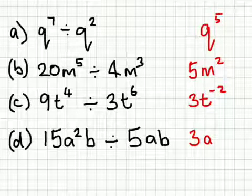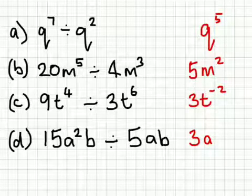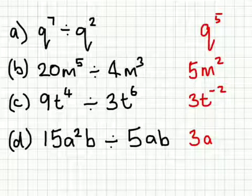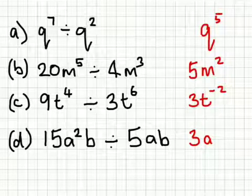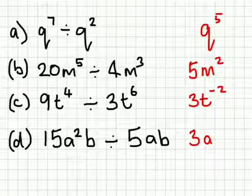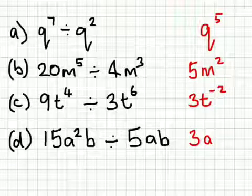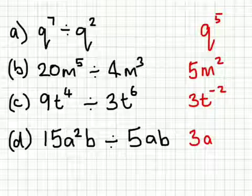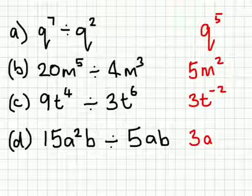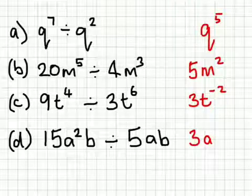Hopefully, when you came down to doing the last one, you realize that with a b and the b both to the power 1, when you subtract them, it gives me b to the power 0. One thing you should remember is anything to the power 0 is 1. So the answer is just 3 here.